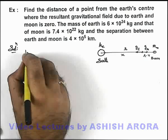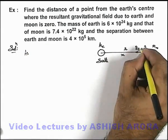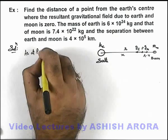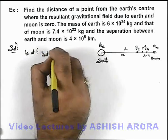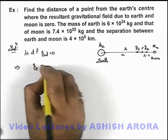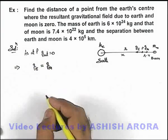So we can say, if this point is p, as at p, g_net is equal to zero, this implies we can state here gravitational field of earth is exactly equal to gravitational field of moon.